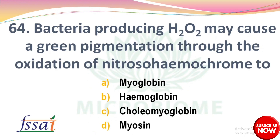Bacteria producing H2O2 may cause a green pigmentation through the oxidation of nitroso hemochrome to? Options: A) Myoglobin, B) Hemoglobin, C) Cholemyoglobin, D) Myosin. The right answer is option C: Cholemyoglobin.